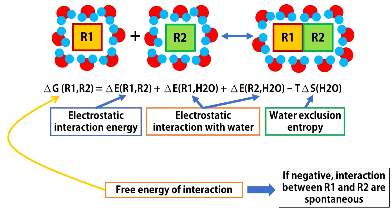Imagine two residues R1 and R2 interacting with each other in the process of folding. The free energy of their interaction has three components: the electrostatic interaction energy between the two residues, the electrostatic interaction energy between the residues and the water molecules, and the entropy gain due to exclusion of water molecules to bulk water.